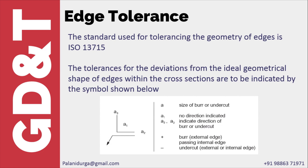The tolerance can be given in three positions. If we give the tolerance here, it tells that the direction of deviation allowed is in the vertical direction. If we give the tolerance here, it tells that the deviation allowed is in the horizontal direction. When we give the tolerance here, it can be in either direction.